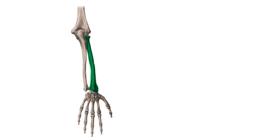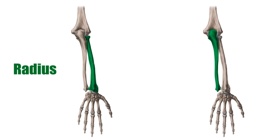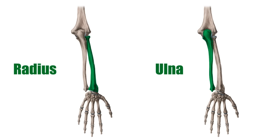There are two bones that make up the structure of the lower arm. In anatomical position, the radius, highlighted in green, is on the lateral side of the forearm, and the ulna, now highlighted, lies medial to the radius and articulates or connects with the humerus at its insertion proximally. You see them here from the posterior view. Distally, the ulna articulates with the radius, which in turn connects to the carpal bones.